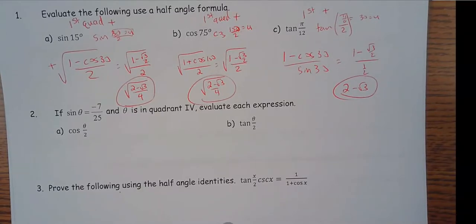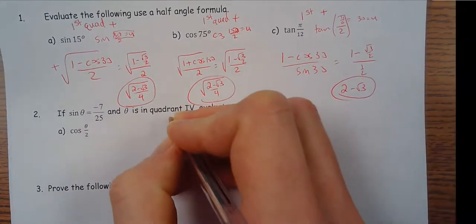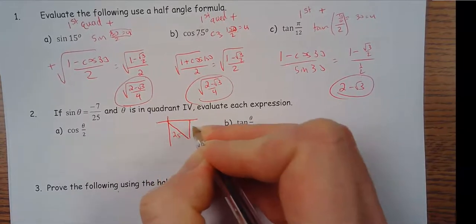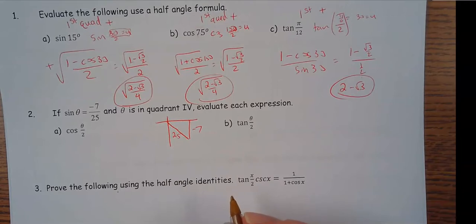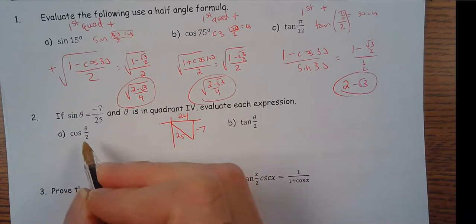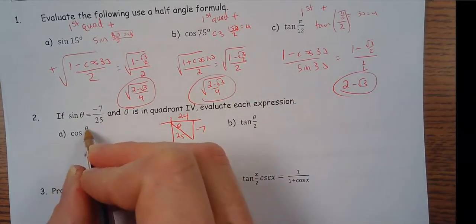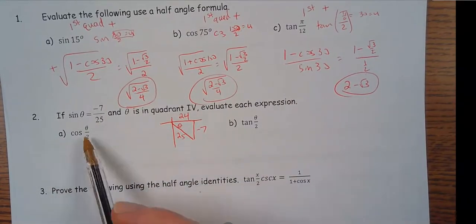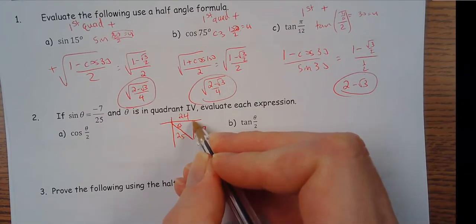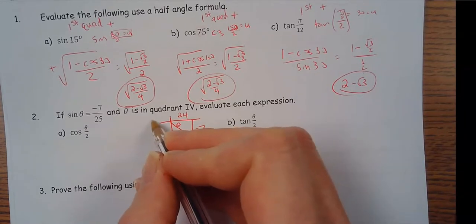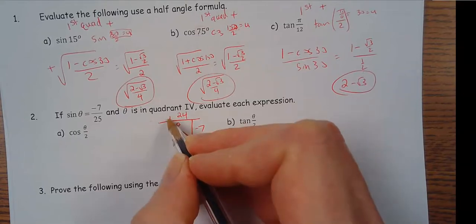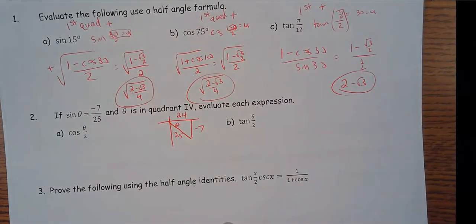Number 2: we're given a specific situation — we're in quadrant 4. Drawing the triangle: opposite side is −7, hypotenuse is 25. Using the Pythagorean triple 7-24-25, the adjacent side is 24 (positive). So this is theta. If I want to find cosine(θ/2), I need to determine what quadrant θ/2 is in. If theta is in quadrant 4 (between 270° and 360°), then θ/2 is between 135° and 180°, which is the second quadrant. In the second quadrant, cosine is negative.